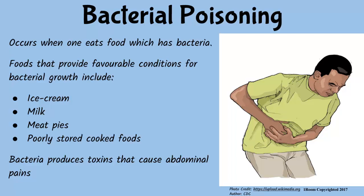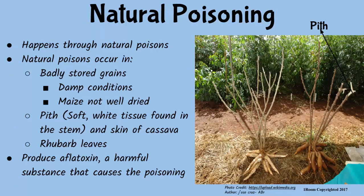Bacterial poisoning is the major cause of vomiting as a result of food poisoning. This is the reason why proteinous foods should be stored under conditions where harmful bacteria cannot thrive. Natural food poisoning is caused by natural poisons formed especially in poorly stored grains — commonly when grains are stored in damp conditions or before they are completely dry — thus producing poisons called aflatoxins. Aflatoxins are caused by a mold fungus found in agricultural products that have been poorly stored.